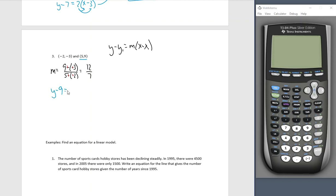Now I could use either of these two points. 2 and 3 are definitely smaller numbers, but when they're negative and I'm dealing with subtractions, that's setting myself up for a possibility of failure. So I choose to use this point instead, the point 5, 9. y minus 9 equals 12 sevenths times x minus 5.